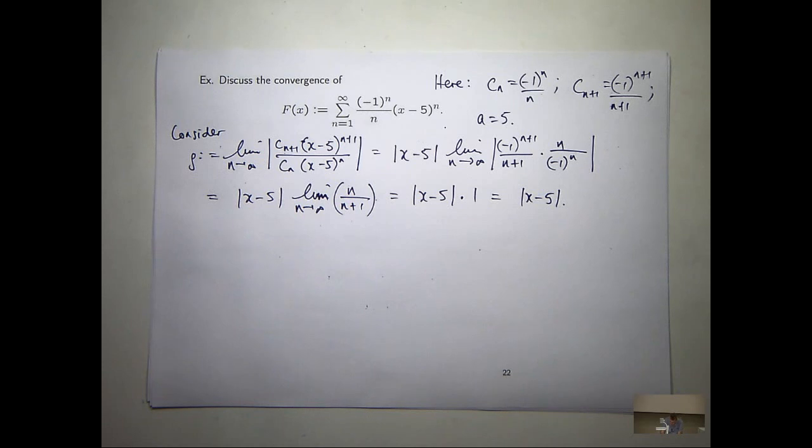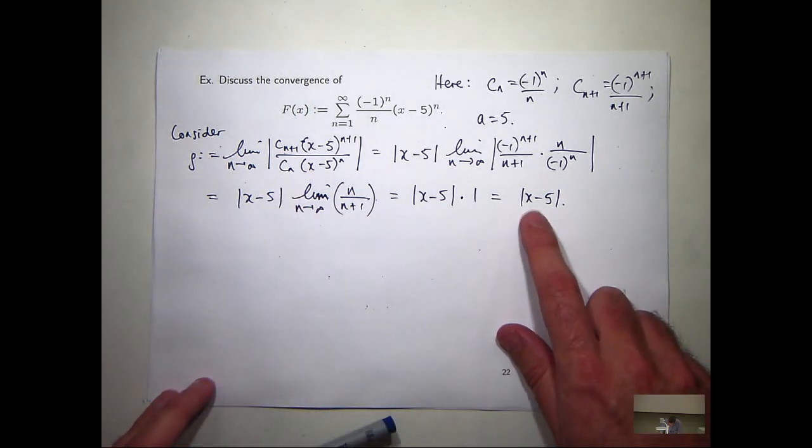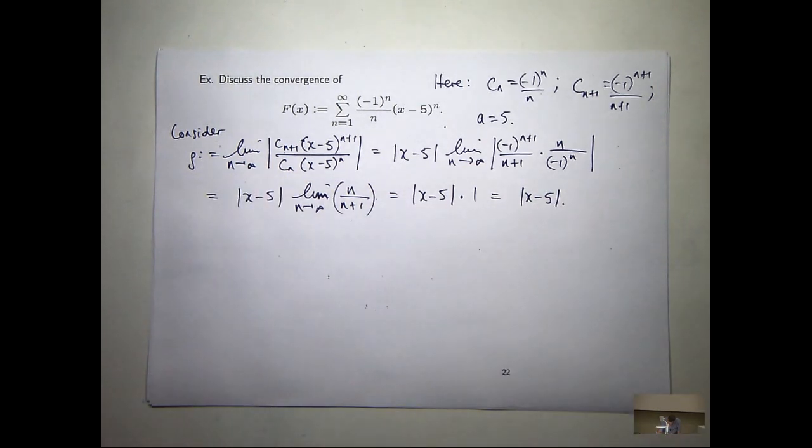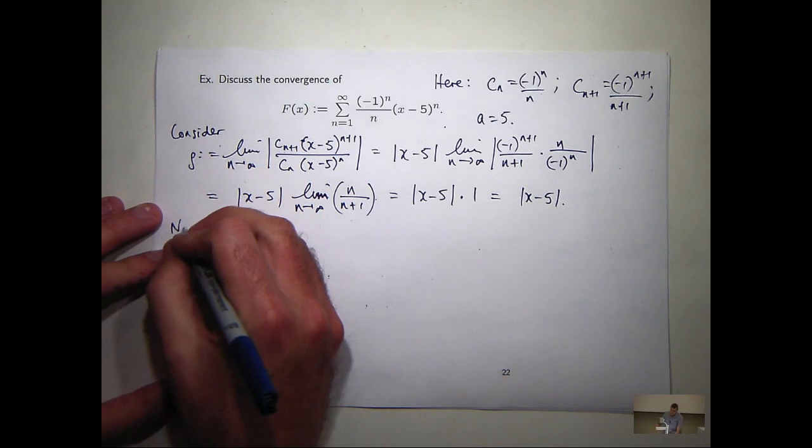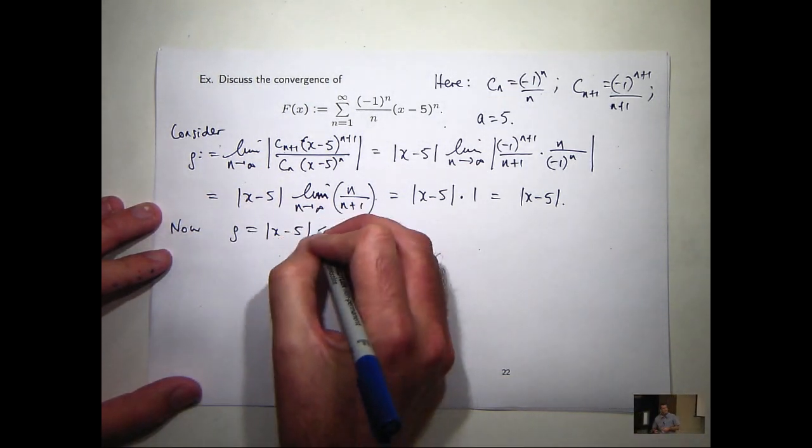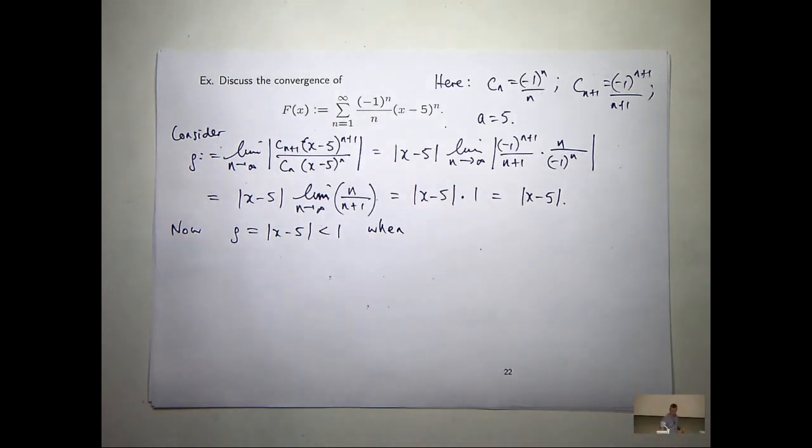So, how can we make this less than 1? Well, just choose an x value. x equals 5 will make this less than 1. So, let's form some sort of interval. So, absolute x minus 5 is going to be less than 1 when this is true.